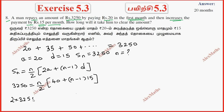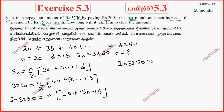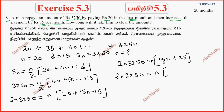So 3,250 equals n into 40 plus 15n minus 15. Multiplying both sides by 2: 2 into 3,250 equals n into 15n plus 25.